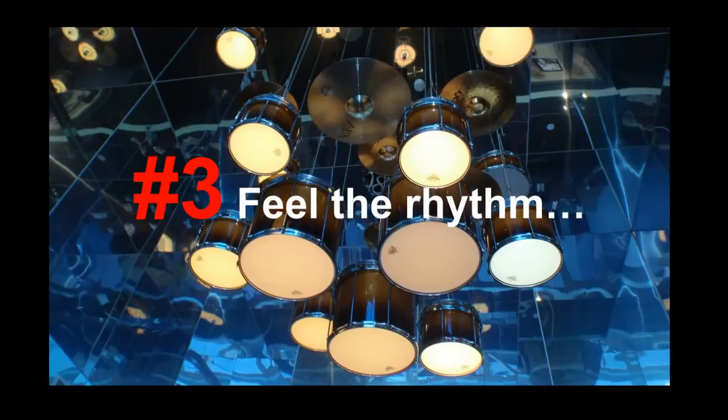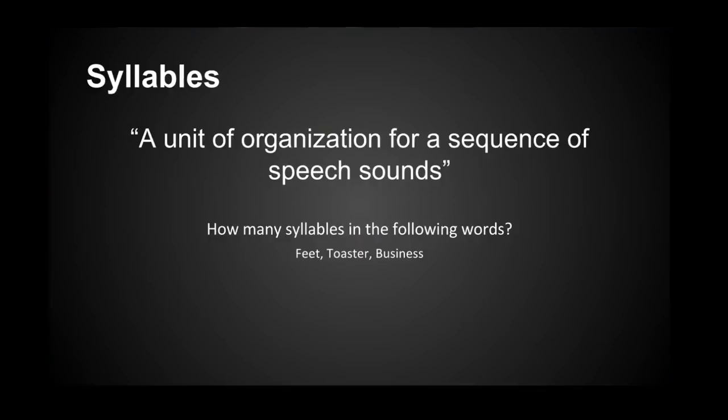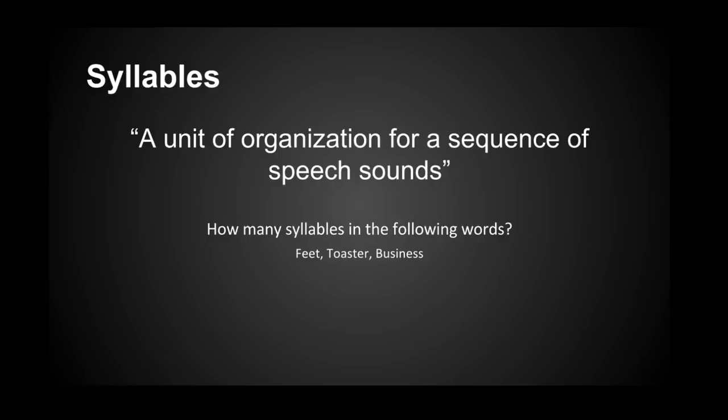Rhyme, assonance and alliteration — we have seen how these harness the sound of language to add spice to poetry. The sound of language can also be used to create rhythm that can take your verse to the next level. We first break words up into individual sounds in order to get the syllables, which is the most basic tool for creating rhythm.